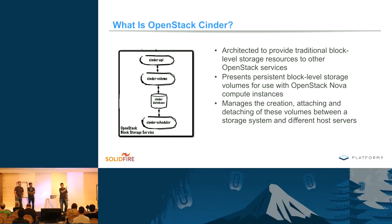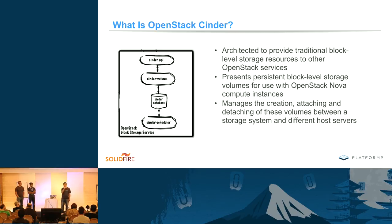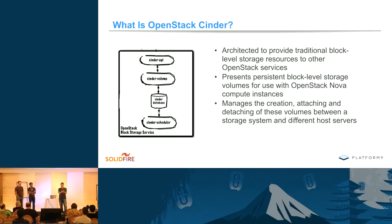A key word worth highlighting is 'persistent.' That's what makes Cinder different from the storage typically used when OpenStack was first created. In the early days, creating a VM used ephemeral storage — typically storage inside the hypervisor compute node. It was called ephemeral because if that VM got deleted, all the data was also deleted, which for cloud-native use cases may even be preferable. But if you're running a database and need the data not to go away when the VM is deleted, that's where Cinder comes in.